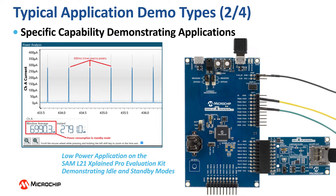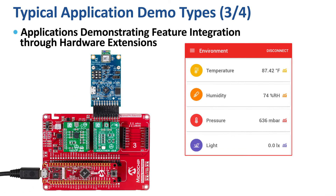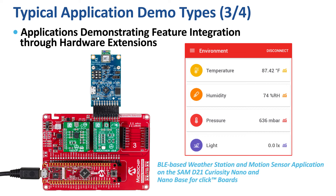An example of this is the low-power application on our SAM L21 Explained Pro Evaluation Kit, demonstrating idle and standby modes. The third application type demonstrates the capabilities of our 32-bit MCUs by extending board or kit capability through MicroBus Click or Explained Pro extensions.